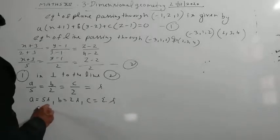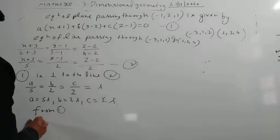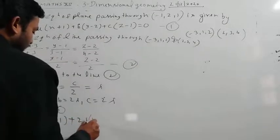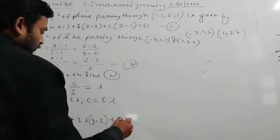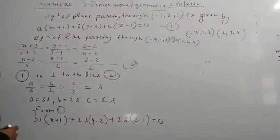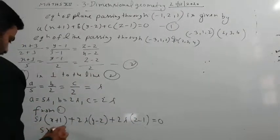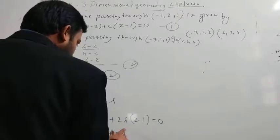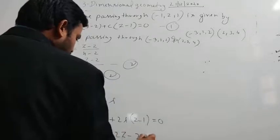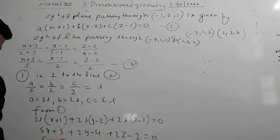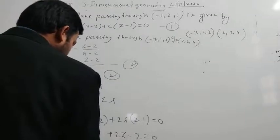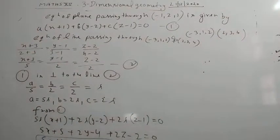So we can write A/5 = B/2 = C/2 = lambda, giving A = 5 lambda, B = 2 lambda, C = 2 lambda. Substituting into equation one: 5 lambda(x + 1) + 2 lambda(y minus 2) + 2 lambda(z minus 1) = 0. Taking lambda common and simplifying: 5x + 5 + 2y minus 4 + 2z minus 2 = 0, so the required equation of plane is 5x + 2y + 2z minus 1 = 0.